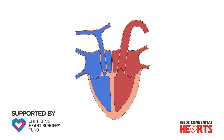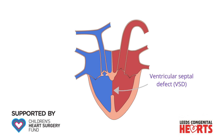The other main abnormality in Tetralogy of Fallot is a hole in the wall that divides the right and left ventricles. This is called a ventricular septal defect, or VSD.